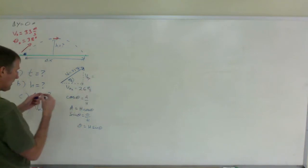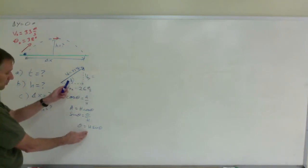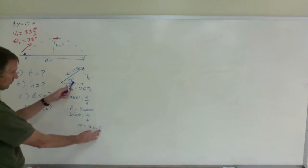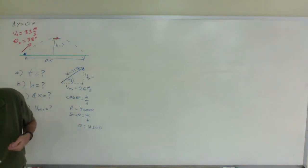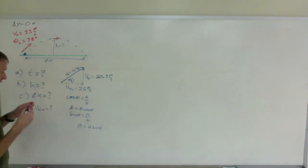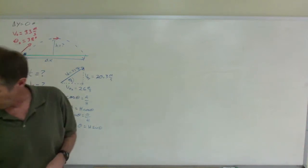To find v sub zero y, that is going to be here. That is the opposite side. Multiply the hypotenuse of 33 times the sine of 38 degrees, and that comes out to be 20.3 meters per second. So anything that involves the y-axis, I will be using that number now for the initial velocity. Anything that involves the x-axis, I will be using this value from now on.